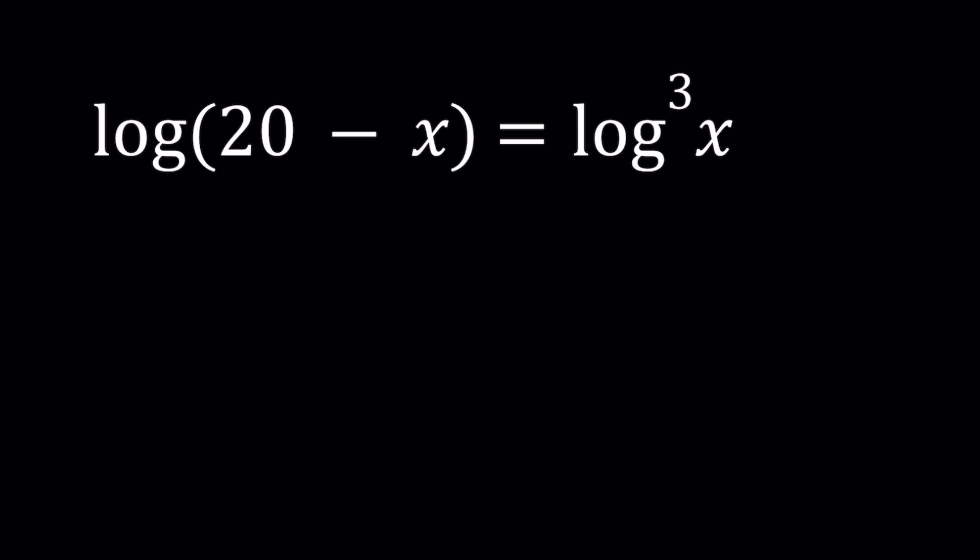On the left hand side we have 20 - x, so 20 - x needs to be greater than 0. By the way, the base is 10 here. It's not written, but that's a common logarithm so the base is 10. If 20 - x is positive, that means x is less than 20.